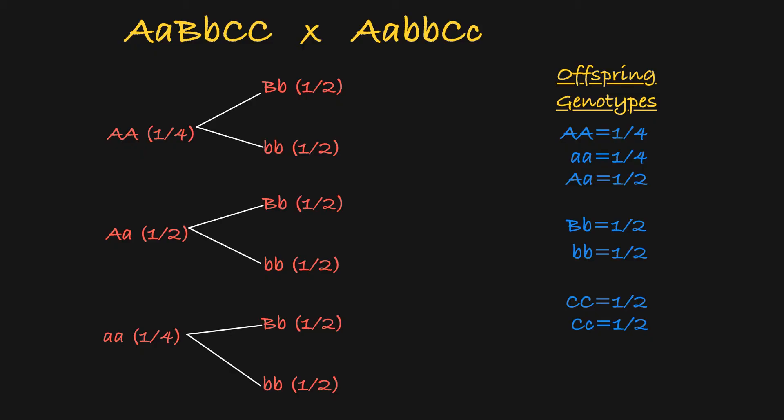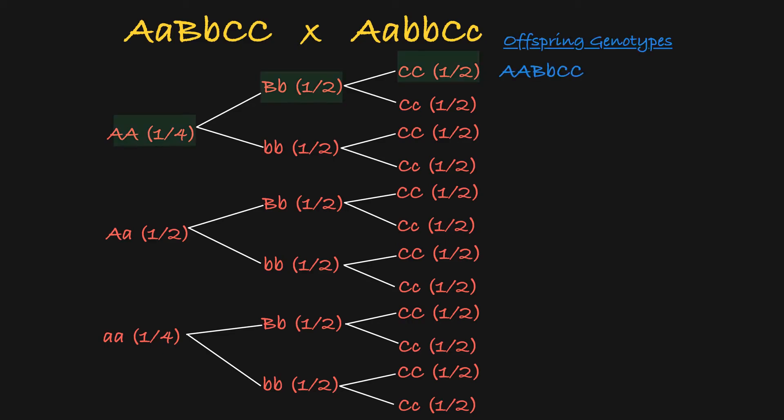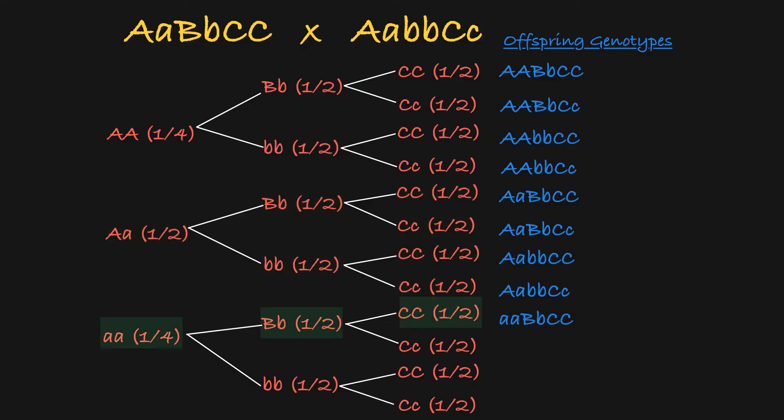And then for each genotype of gene B, I will connect them to my possible genotypes for gene C. So this is our full branched line diagram. And if you follow each path, you can see every possible genotype that could occur in the offspring of this cross.